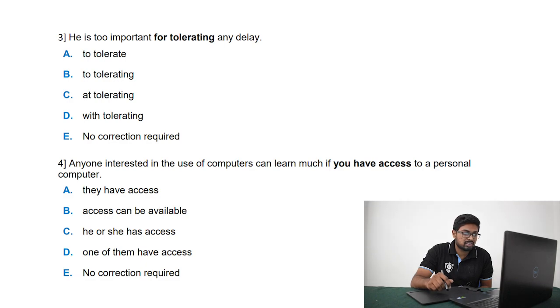The fourth question is: anyone interested in the use of computers can learn much if you have access to a personal computer. This clearly doesn't make any sense because somebody else is interested and it doesn't matter if you have a personal computer. The keyword here is anyone. If it was a group, then you could have used 'they have access.' But since it is anyone, it is referring to one particular individual, either a guy or a girl. So the right answer is: anyone interested in the use of computers can learn much if he or she has access to a personal computer.